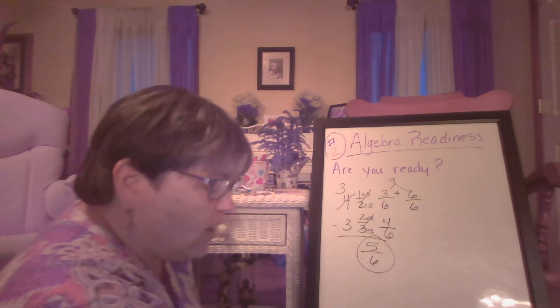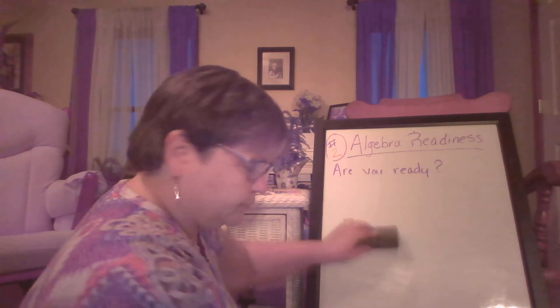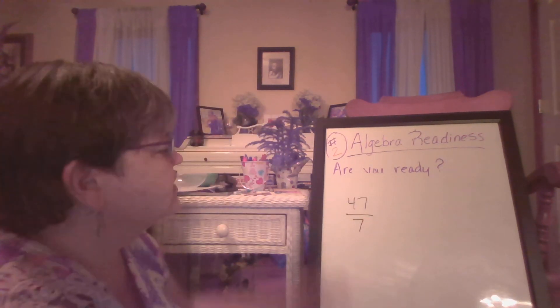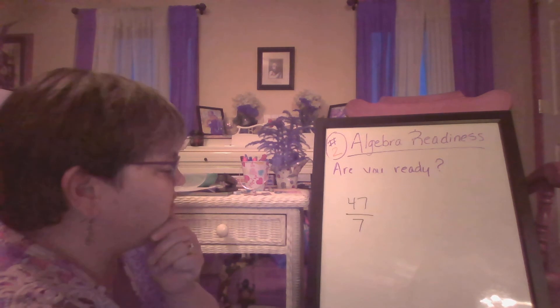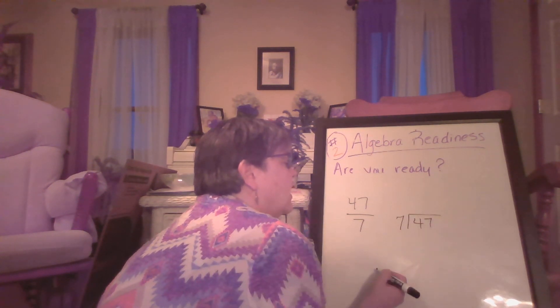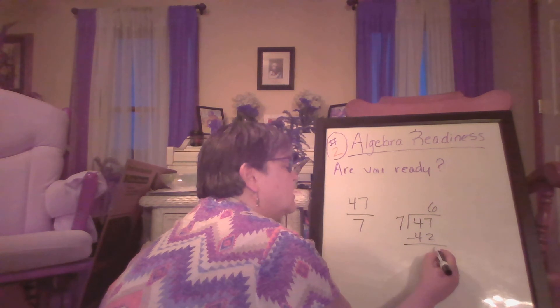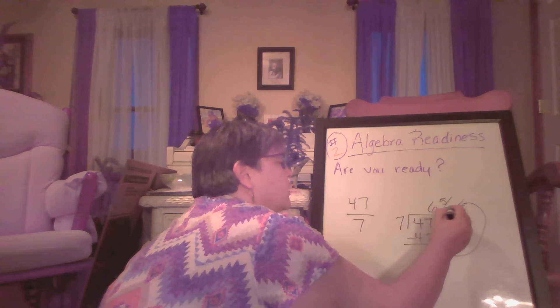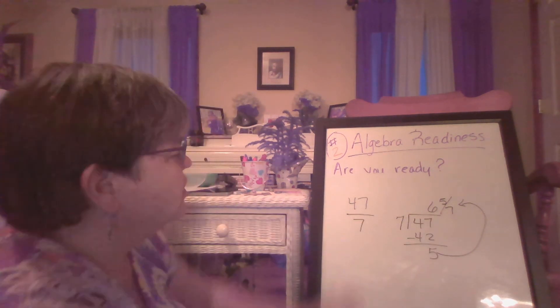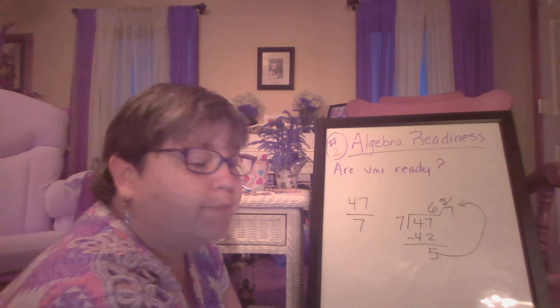One more problem with fractions. This is an improper fraction — 47/7 — and there are no common divisors I can put into both, so I simply have to divide the denominator into the numerator. Seven will go into 47 six times. Six times seven is 42 — I subtract and get five. That five becomes my numerator, and seven stays as my denominator. The divisor becomes the denominator. So 47/7 is the same as six and five-sevenths.